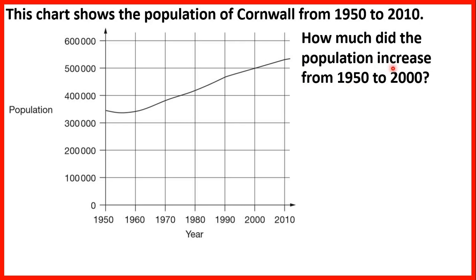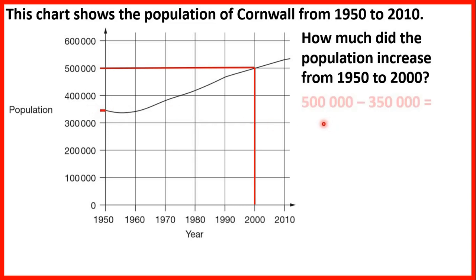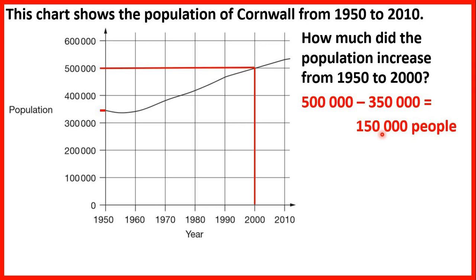How much did the population increase from 1950 to 2000? It's asking for the increase, so we find the difference. Looking up from 1950, the line is halfway between 300,000 and 400,000, so that's 350,000. Looking up from 2000, the line is on 500,000. So we work out 500,000 minus 350,000, and our answer is 150,000 people. An answer between 130,000 and 180,000 gets you the mark.